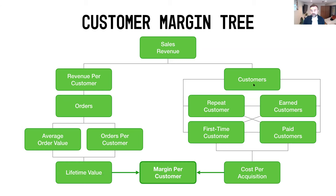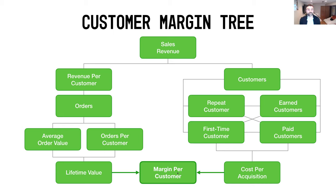On the other side of the equation you have customers who are either repeat customers or first-time customers, or earned customers — those you've acquired through word of mouth, referrals, or social media — or paid customers acquired through advertising. These customers come at a cost, which we call cost per acquisition. Lifetime value minus cost per acquisition gives you your margin per customer — that's the customer margin tree.